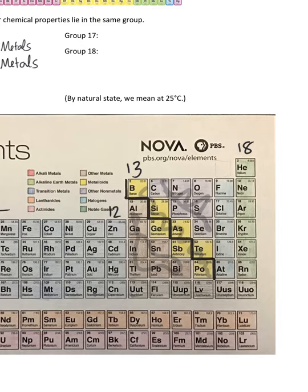Once you get back over here to group seventeen, we have the halogens. Then group eighteen, of course, is our noble gases over on the end.